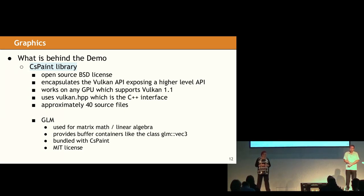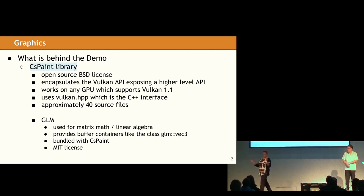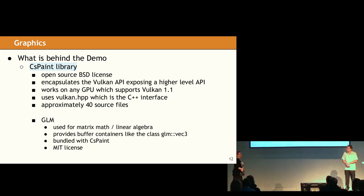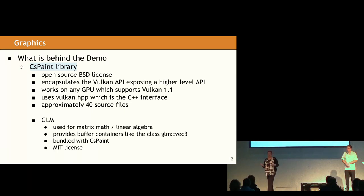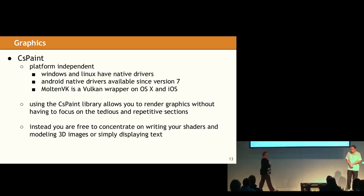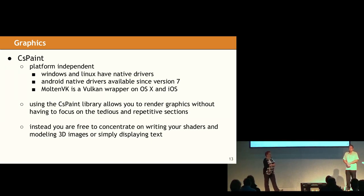We also use GLM, which is a library for linear algebra. It's also open source and it's bundled with CS Paint. So the only external dependency we have is the Vulkan API itself. So as you decide you want to take a look at CS Paint, all the source for CS Paint, the demo — everything is available. It's all on GitHub, it's all open source. And if you're sitting there going, well, I would like to do something other than a pot, you'll want to start with the demo and take a look at everything.